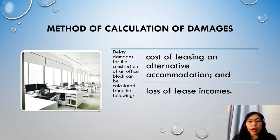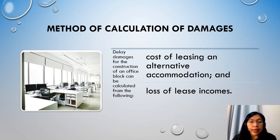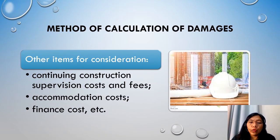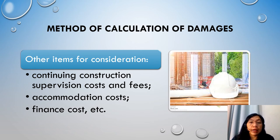For the construction of an office project, liquidated damages may be calculated on the cost of leasing alternative accommodation — for example, if the occupier of the office is the owner. However, if the office building is likely to be leased, the damages could be calculated on the likely lease income, similar to the hotel example. Other items to be considered in the calculation of damages may include continuing construction supervision costs and fees, accommodation costs, and finance costs if there is a loan funding the project. This list is not exhaustive.